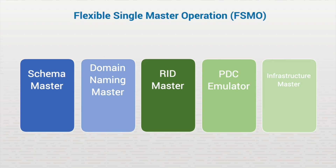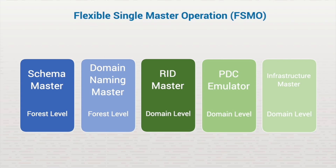Let's look at these five roles. Two FISMO roles are at the forest level: the Schema Master and the Domain Naming Master. At the domain level, there are three FISMO roles: the RID Master, the PDC Emulator, and the Infrastructure Master. Let's examine each of these a little closer.